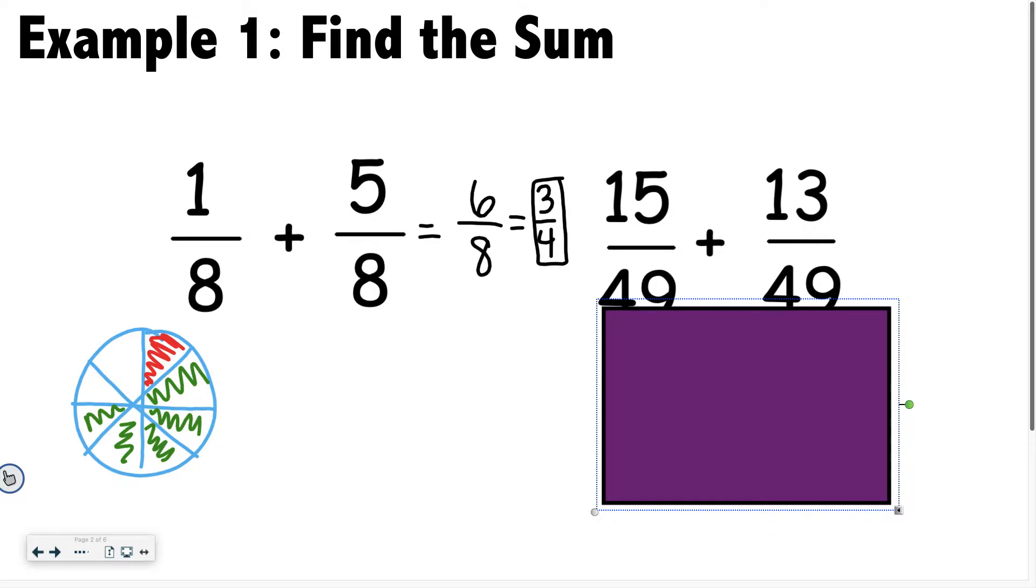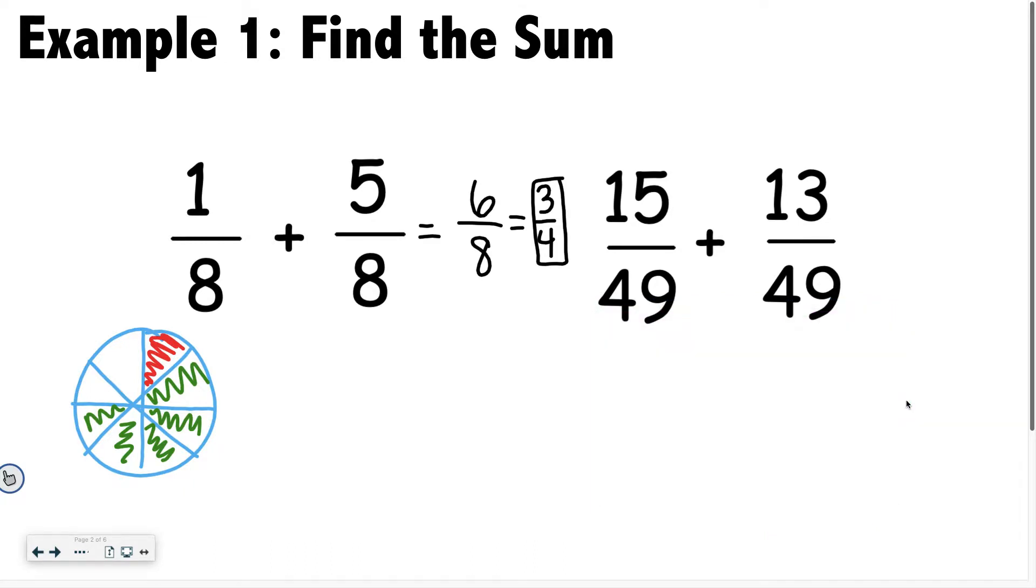Okay, so then what I want you guys to do is I want you to look at this next problem on your own. Notice all that we did was we did 1 plus 5. The reason we were able to do that is because our denominators, the numbers on the bottom, are the same. Okay, so all you have to do is add the top. So 15 49ths plus 13 49ths equals what?